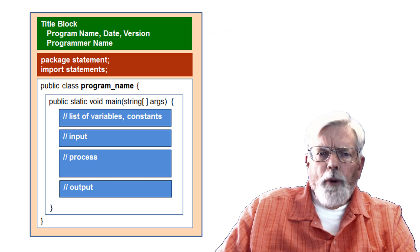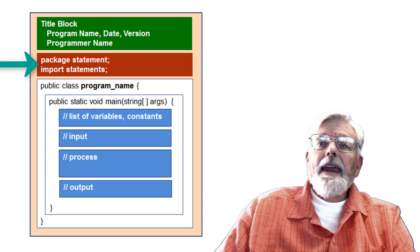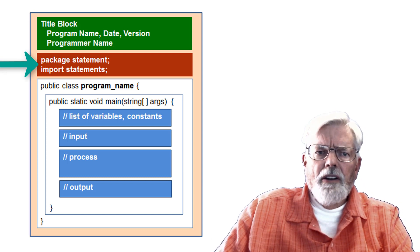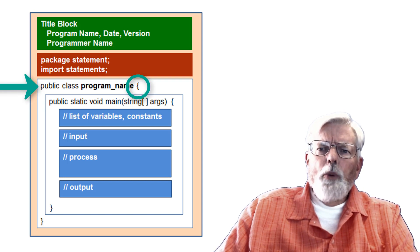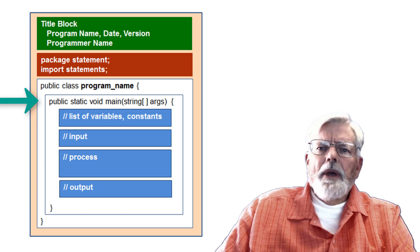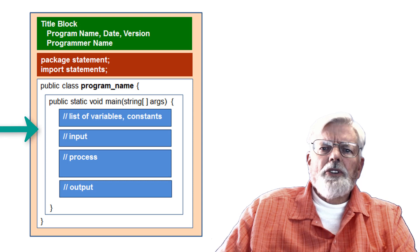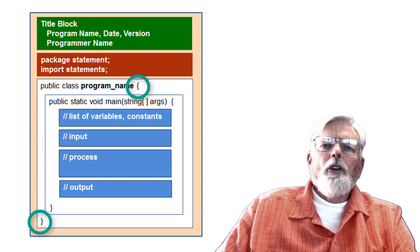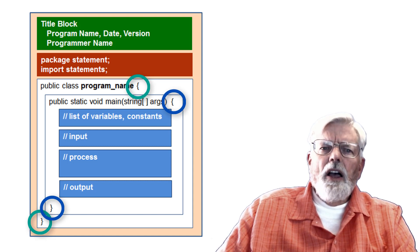The typical format for a Java program starts out with the title block, the package statement, and any import statements that are needed. We then have the public class statement with its open curly brace. This is followed by the void main statement and its open curly brace, then the list of variables, input, processing, and output. There are closed curly braces for each open curly brace. The braces identify a block of code or data.